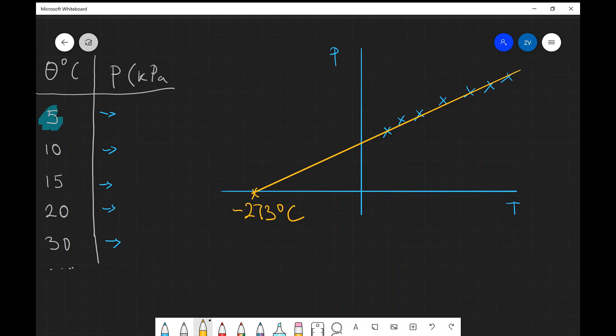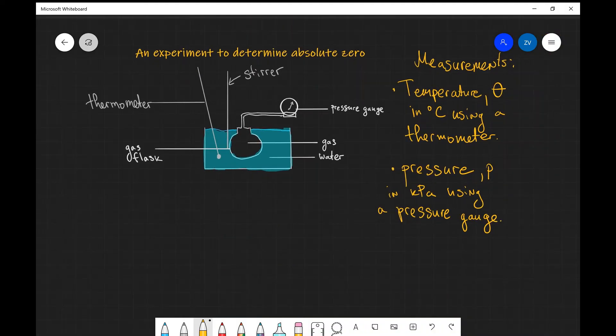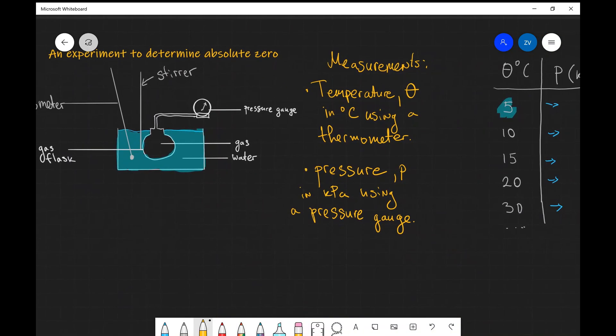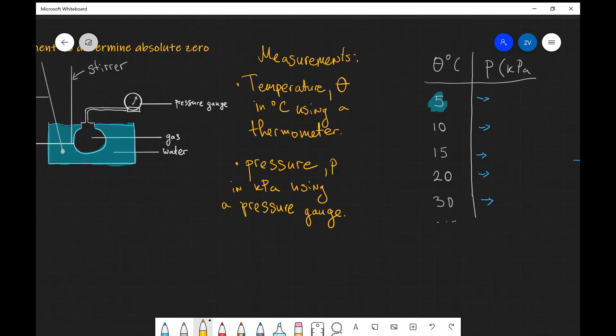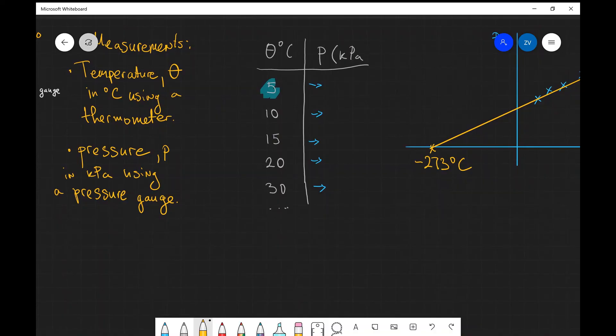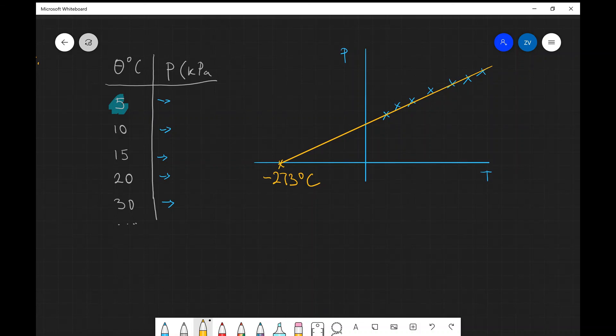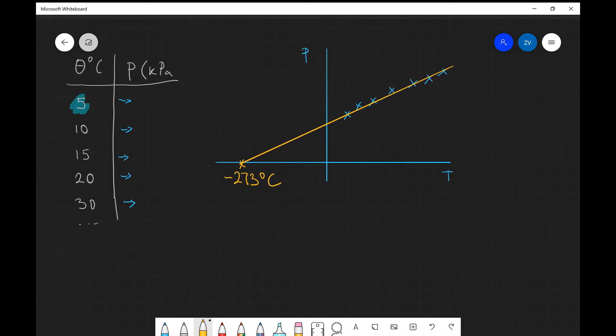Okay folks, so hopefully this makes sense. Just to summarize, we have the setup over here in which we increase the temperature and we see the effect on the pressure. We measure the temperature using a thermometer, we measure the pressure using a pressure gauge. Then what we do is use our measurements to plot a graph of pressure against temperature, then we extrapolate our line of best fit to find where it reaches the x-axis because at the position where the pressure is zero, this is when absolute zero really occurs. So hopefully you've enjoyed this video, if there are any questions please feel free to drop a comment down below and consider subscribing, thank you.